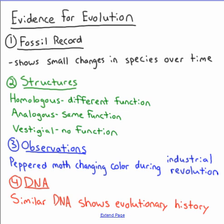Next is structures — a brief overview of homologous, analogous, and vestigial. Homologous structures have different functions but similar underlying anatomy, such as pentadactyl limbs — the fin of a whale and the bat wing. All of them are pentadactyl but they are used for different functions.